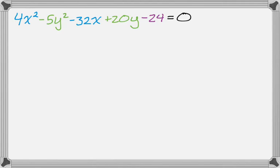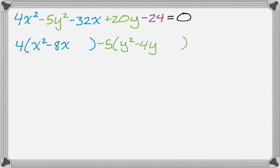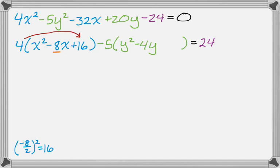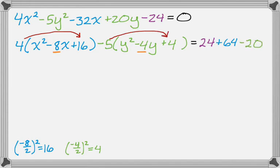For the third example, I'll show how I actually do the work — grouping and factoring at the same time. I start with 4, taking a 4 out of everything with an x: 4(x squared minus 8x), leaving a space. Then I take negative 5 out of everything with a y: minus 5(y squared minus 4y), leaving a space, equals 24. Now focusing in: negative 8 over 2 squared gives 16, but it's really 4 times 16, so I add 64 to the right. Then negative 4 over 2 squared gives 4, but it's really negative 5 times 4, so I subtract 20 from the right, giving me 4.